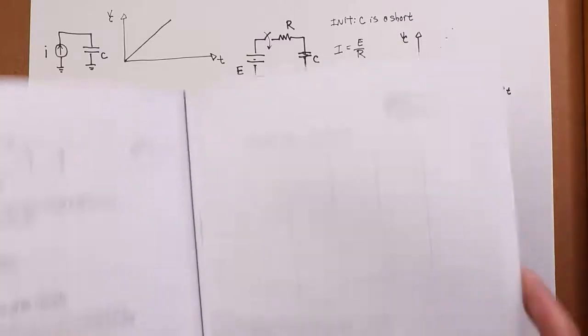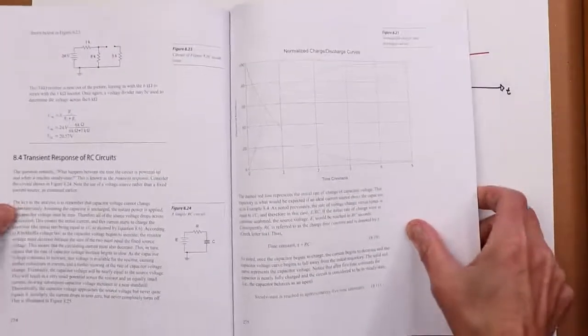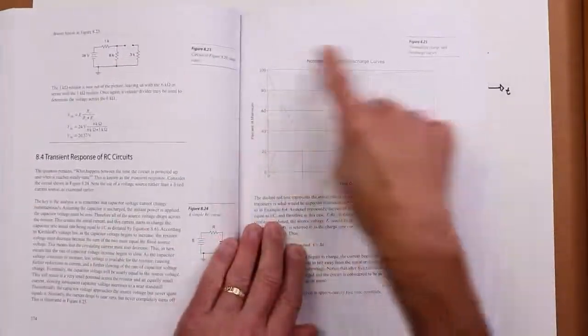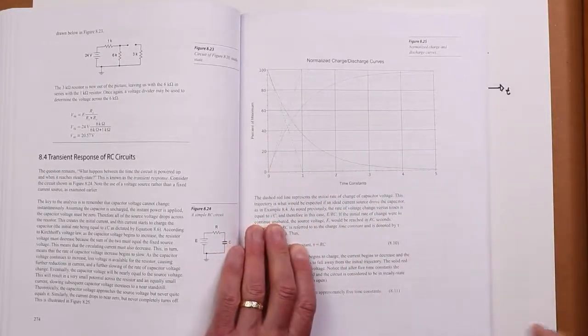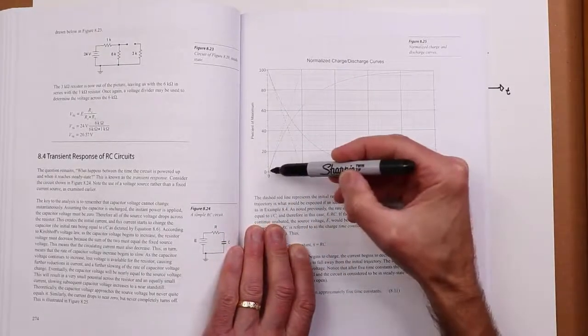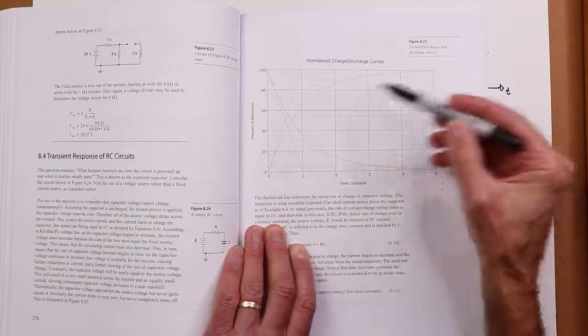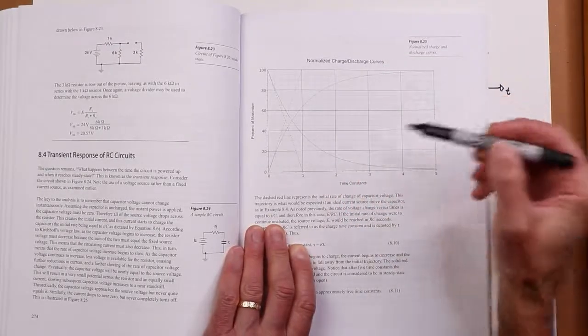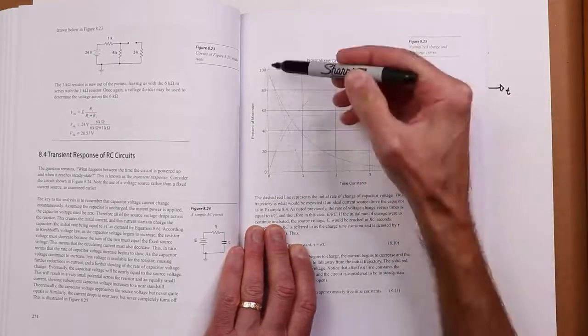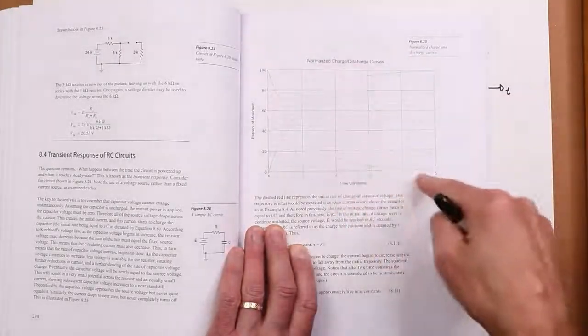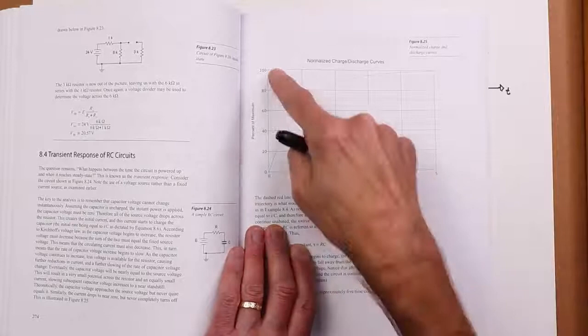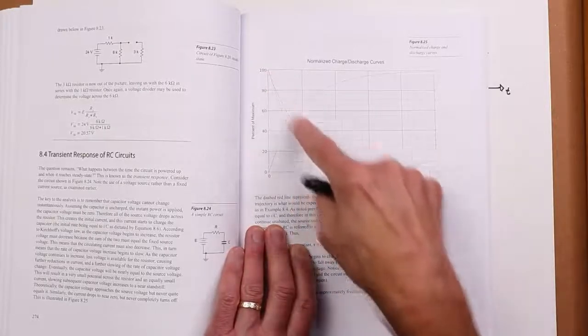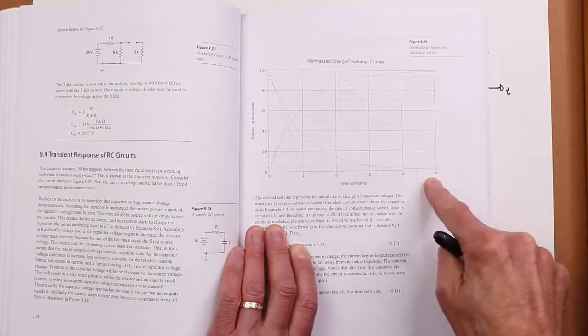You want a nicer version of that? Well, get out your book. So here we are on page 275. This is a normalized charge-discharge curve that we have. This is the thing that I'm attempting to draw nicely here. Here's your initial takeoff. Here's the actual curve. And as you'll see, there is a mirror image to this. This falling curve is what the current and the resistor voltage happen to be doing.